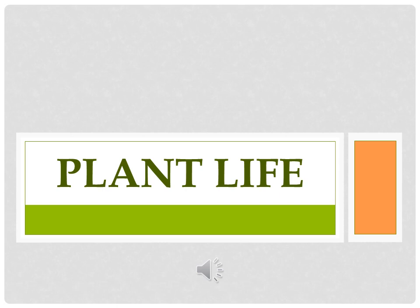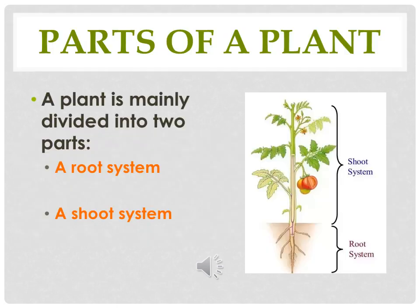Now continuing the topic, today we will take up Parts of a Plant. A plant is mainly divided into two parts: a root system and a shoot system.